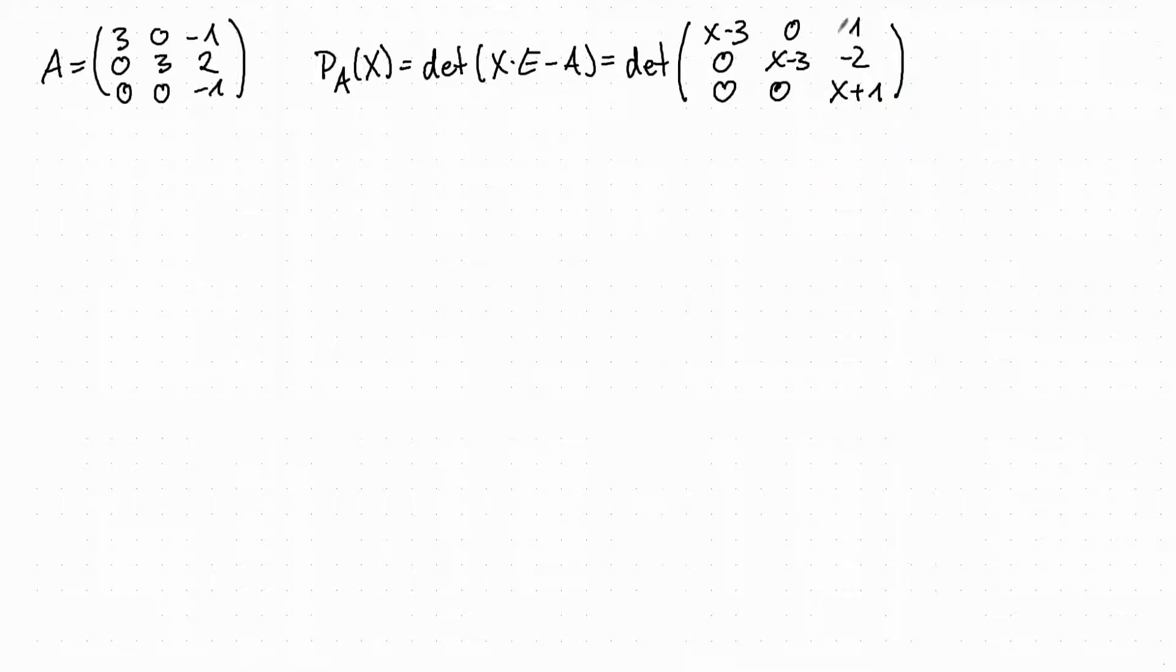This is an upper triangular matrix, so the determinant of this is just the product of the diagonal entries. So we can already see that the eigenvalues are 3 and minus 1.